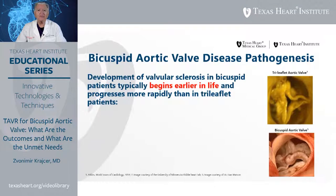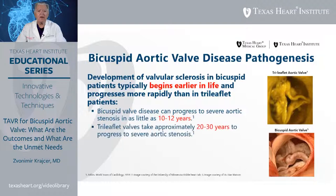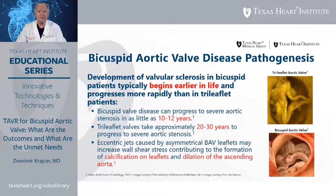Bicuspid Aortic Valve disease pathogenesis consists of development of valvular sclerosis in Bicuspid Aortic Valve patients that typically begins early in life and progresses more rapidly than in tri-leaflet patients. Bicuspid valve disease can progress to severe aortic stenosis in as little as 10 to 12 years, while patients with tri-leaflet valves have approximately 20 to 30 years to progress. The eccentric jets caused by asymmetric bicuspid aortic valve leaflets lead to increased wall stress, contributing to calcification of the leaflets and progressive dilatation of the ascending aorta.